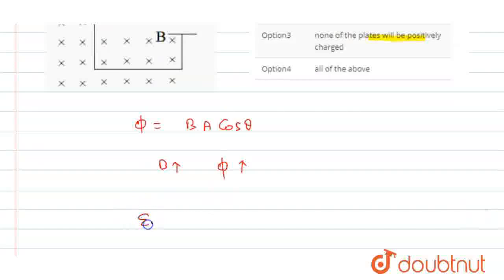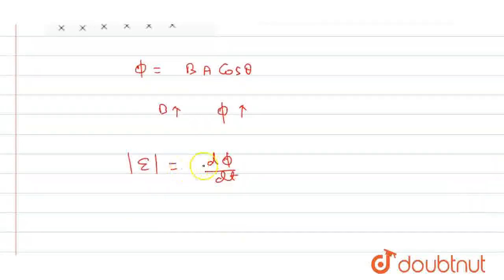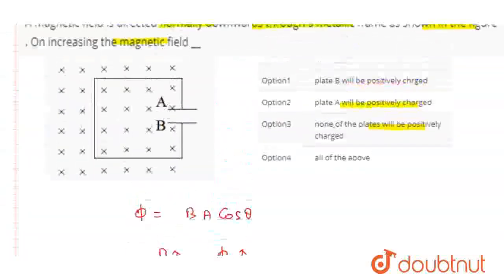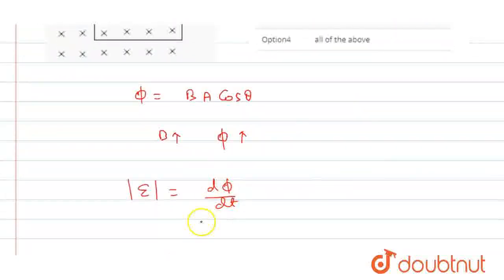The induced EMF magnitude is the rate of change of flux, given by dΦ/dt. The direction of the induced current is such that the magnetic field produced by it will oppose the increasing magnetic field.